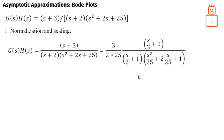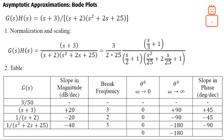The second step is drawing the table. The gain constant doesn't contribute any slope, break frequency, or phase. The zero at minus three contributes a plus 20 dB per decade slope in magnitude, with a break frequency at three. It has zero degrees at low frequencies and plus 90 degrees at high frequency, with a slope of plus 45 degrees per decade.